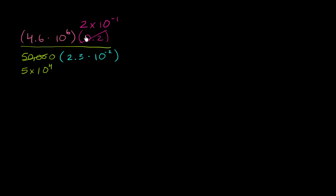So now let's take the product in the numerator and the denominator. So the numerator, I'm just going to swap the order in which I'm multiplying. I'm just multiplying a bunch of stuff - 4.6 times 10 to the sixth times 2 times 10 to the negative 1. It doesn't matter what order I multiply them in. So I could rewrite this as 4.6 times 2 times 10 to the sixth times 10 to the negative 1.